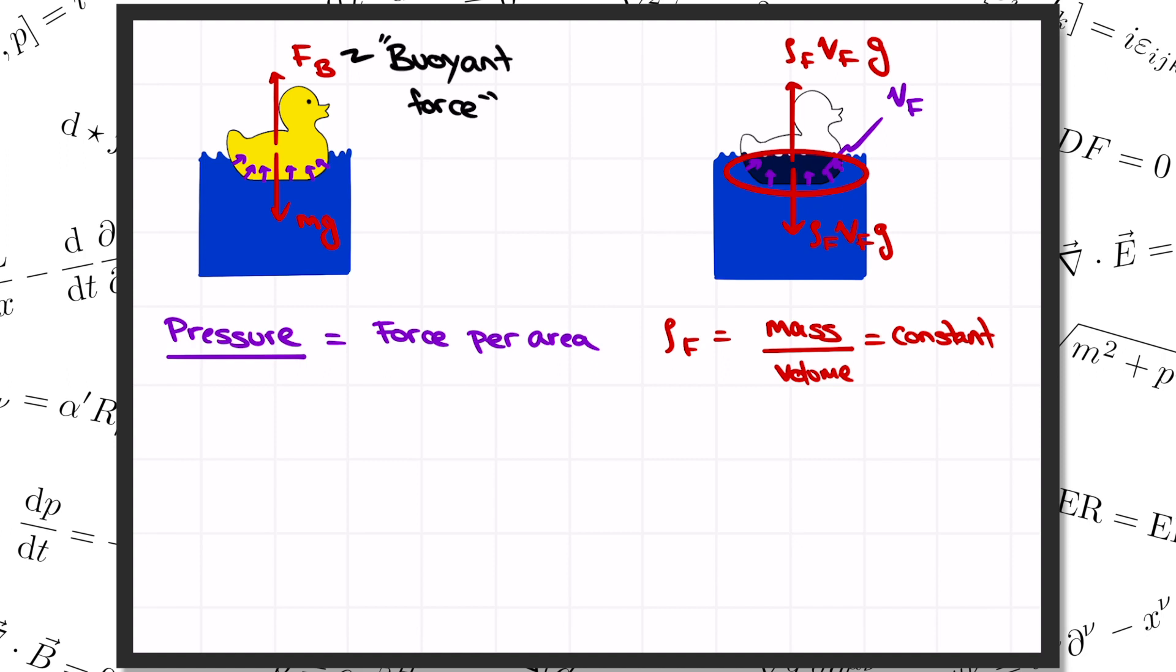Now let's put the duck back in the pool. The same total force is going to be exerted on its surface. So the buoyant force on the duck will be rho times V times g. In words, then, the buoyant force equals the weight of the fluid that's been displaced by the object.